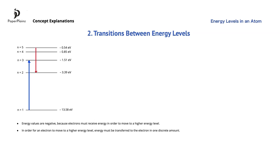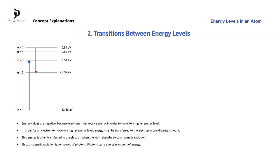We'll see an example in a moment to explore this further. The energy needed for the transition to happen is often transferred to the electron when the atom absorbs electromagnetic radiation. We learned in topic 4 that electromagnetic radiation, for example light, is treated as a wave in some situations. An interesting property of electromagnetic radiation is that in some other situations it can be treated as a collection of particles. These particles are called photons, so we can say that electromagnetic radiation is composed of photons, and these photons carry a certain amount of energy. The idea that electromagnetic radiation can be treated as both a wave and a collection of particles is called wave-particle duality.